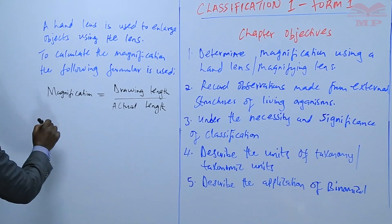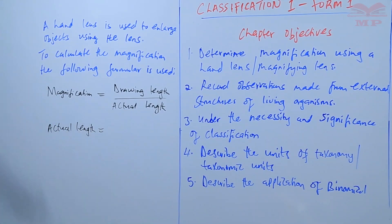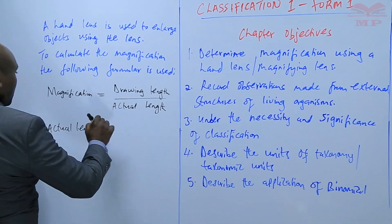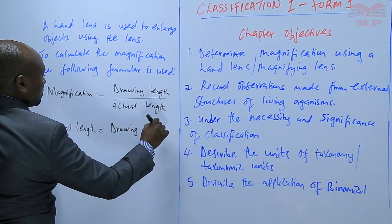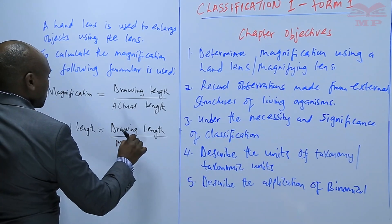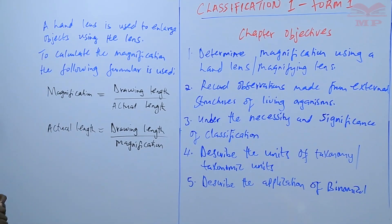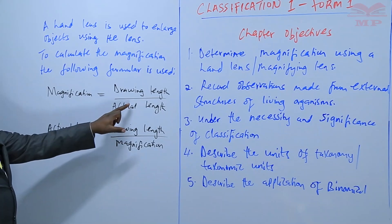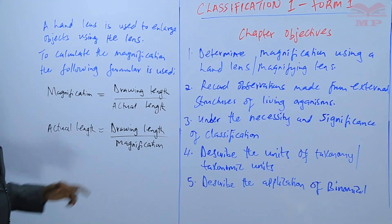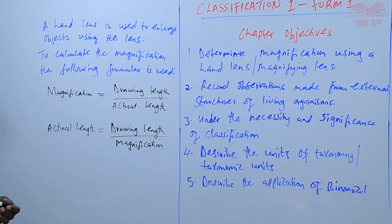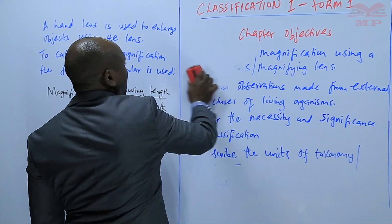If you are told to calculate the actual length, you just make it the subject of the formula, and the actual length will be the drawing length divided by magnification. So that is how magnification is calculated using the first formula, and from it you can also derive the actual length.